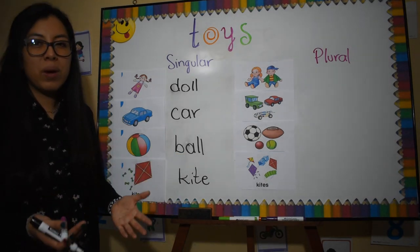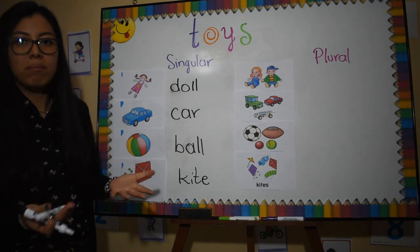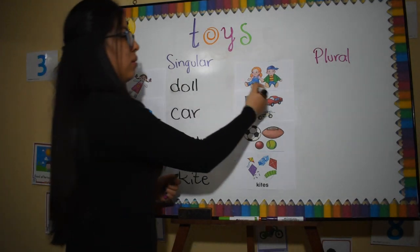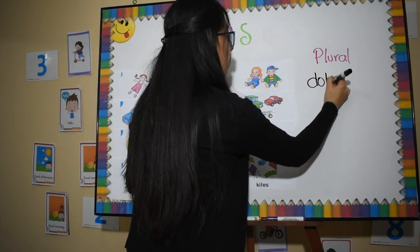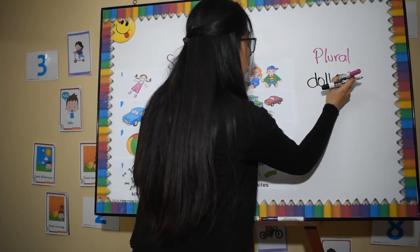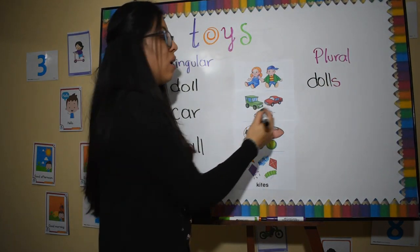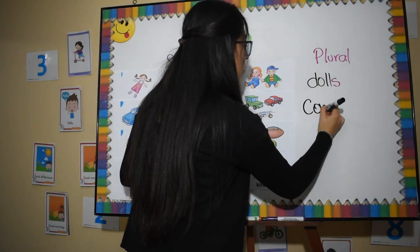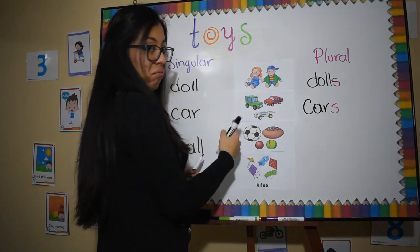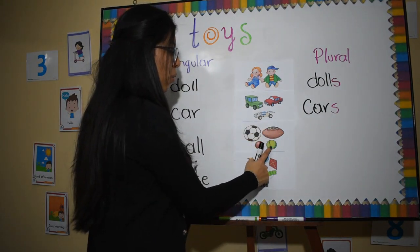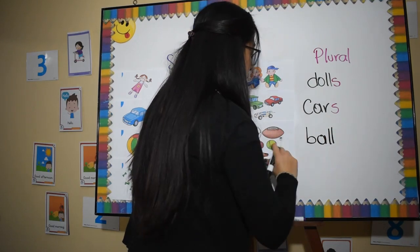But what happens when I have more elements, when I have more toys? ¿Qué pasa cuando yo tengo más juguetes? So here I have two dolls, so I'm going to say dolls. Here, one, two, three cars. Cars, let's count: one, two, three, four balls.